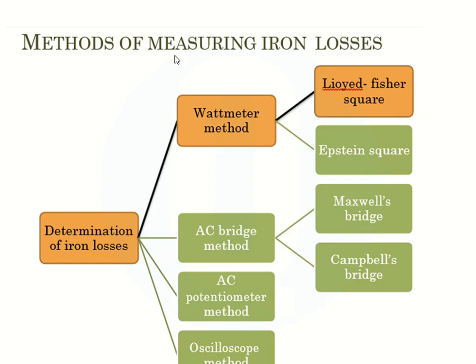Next, the method of measuring iron loss. There are mainly four methods for measuring iron loss, but you need to study only one method — the Lloyd-Fisher square. Iron loss can be determined by the wattmeter method, AC bridge method, AC potentiometer method, or oscilloscope method. You have to study only the Lloyd-Fisher square method and the wattmeter method.